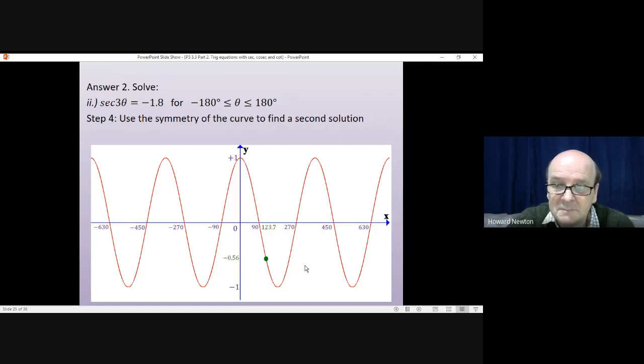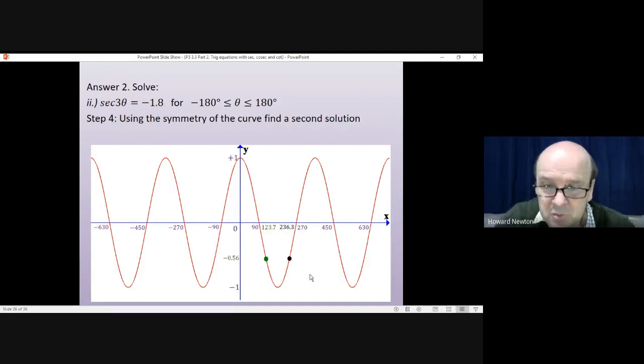By whatever method you use, you should get this as the second solution. So also minus 0.56 because that's where all of the solutions will be. And in this case, 236.3. If you did 270, take away 33.7. That would be one way of getting that.